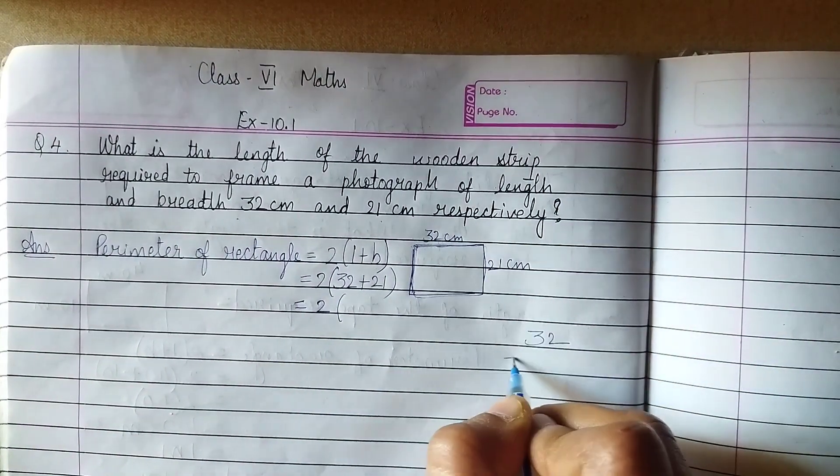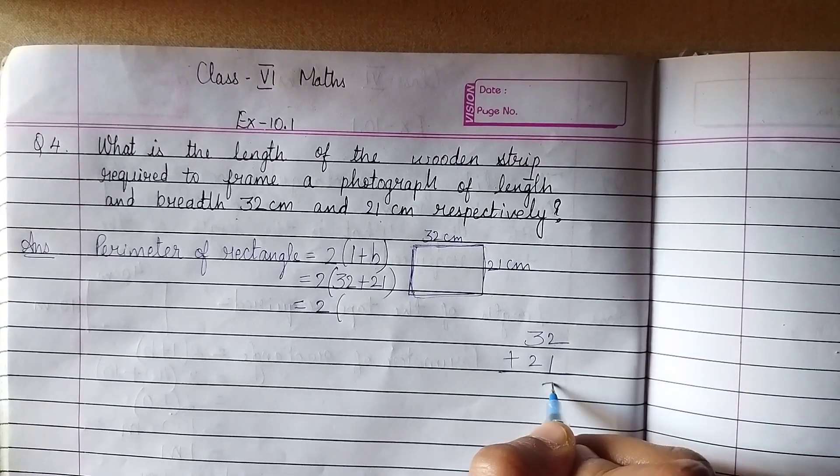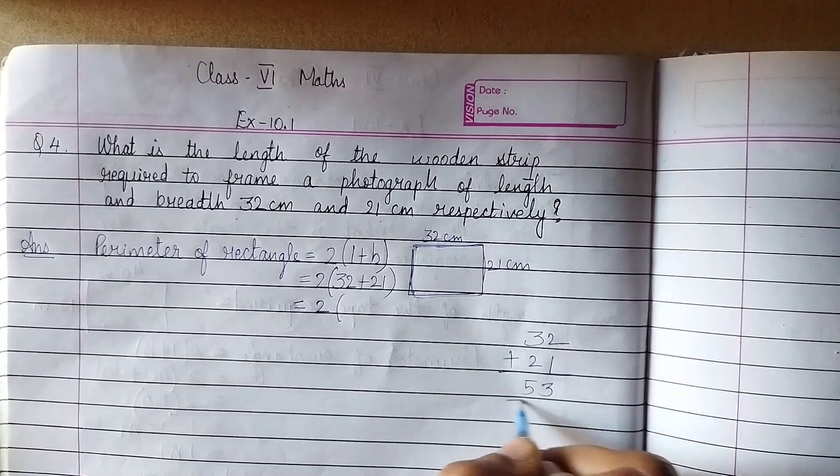Add karte hai first. 32 plus 21, 2 plus 1, 3, 3 plus 2, 5. 53 cm.